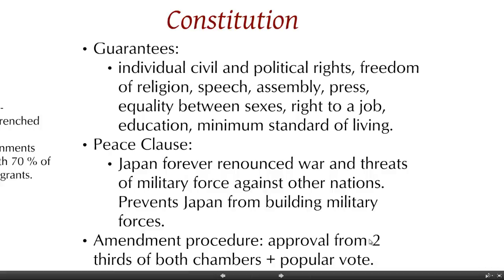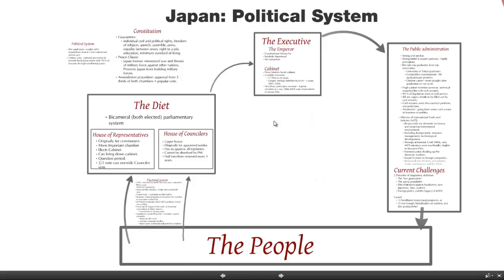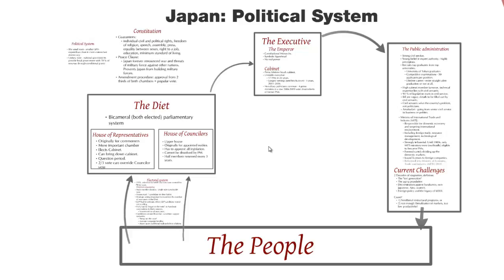It's possible to amend this constitution through the approval of two-thirds of both chambers and a popular vote. Looking at the overall system, this can be fairly quickly recognized as a parliamentary system. You have the people voting in both chambers of the legislature, called the Diet, and then the Diet selects the executive, with the executive guiding the public administration — very much like the system in the United Kingdom in many senses.